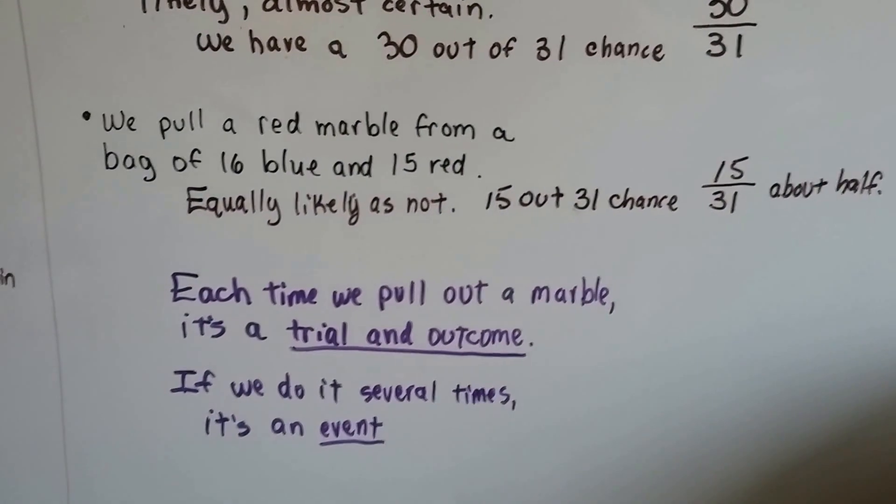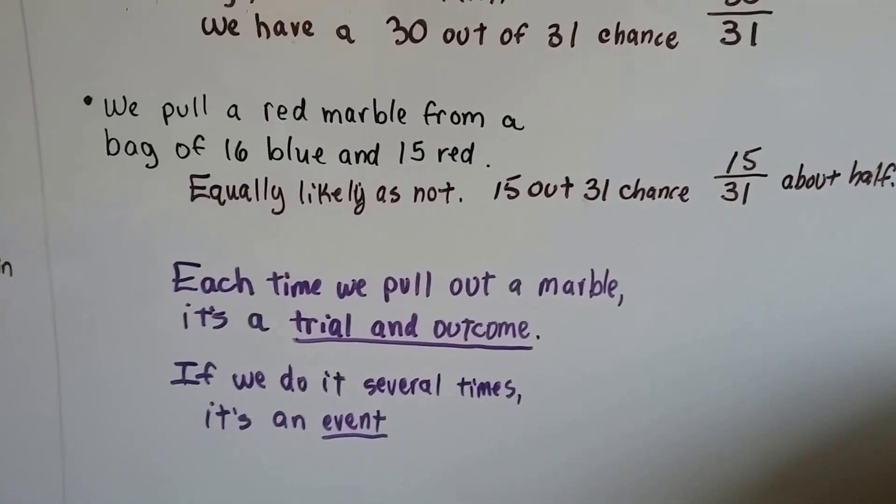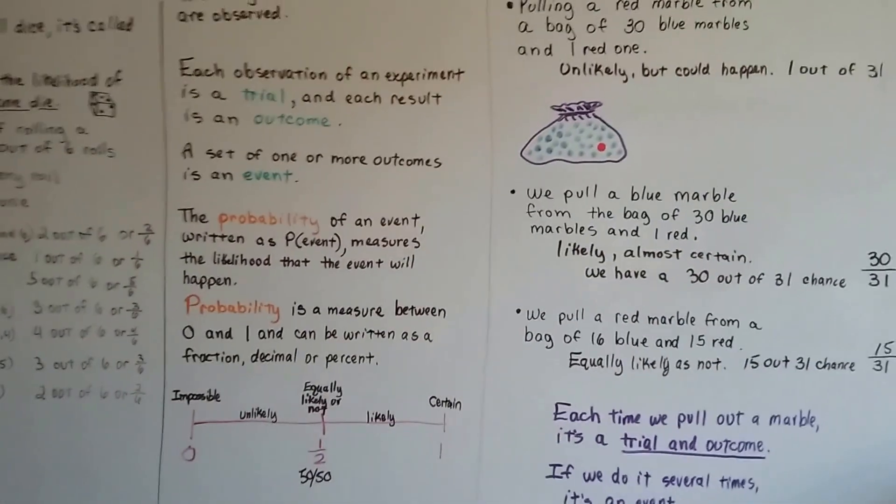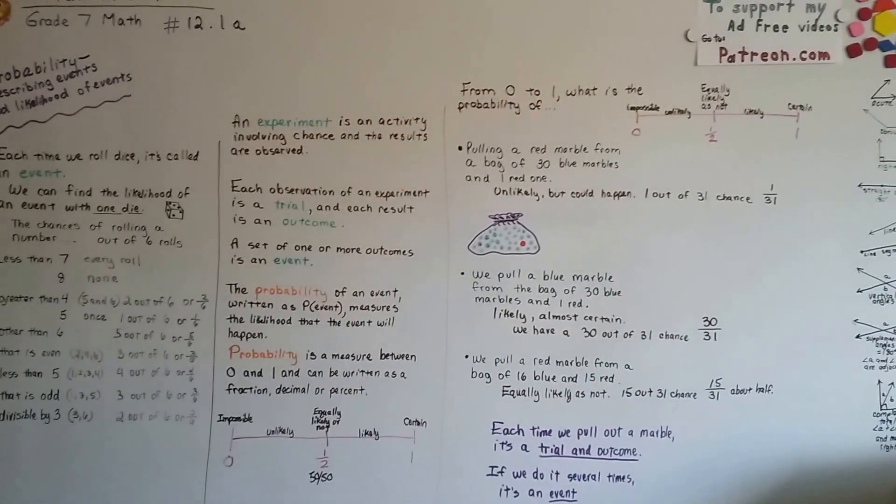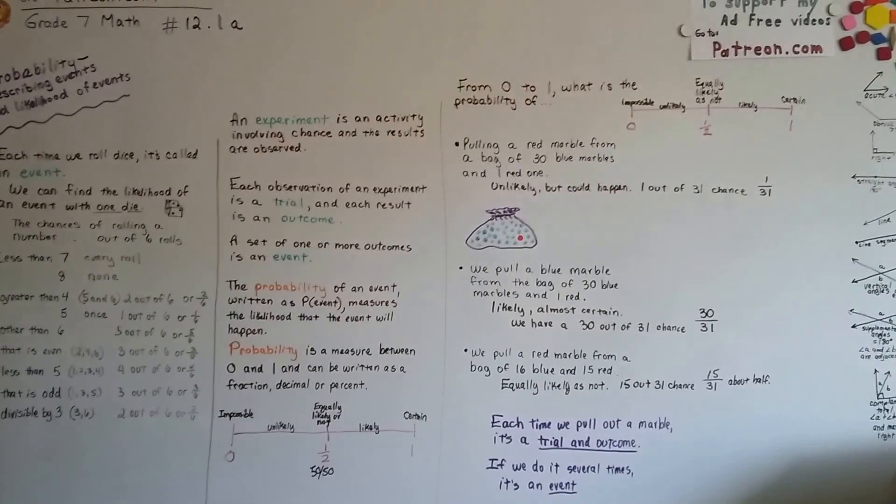So each time we pull out a marble, it's a trial and outcome, and if we do it several times, it's an event. Alright, so that's events and the likelihood of events. We're going to talk about finding probability in the next video. I hope this was helpful. See you there. Bye.